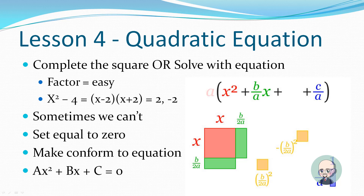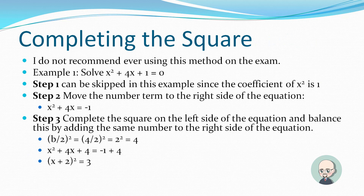We're back with lesson four: quadratic equations. There are two methods to solve them — either complete the square or use the quadratic formula. Sometimes you can factor, which is easy. For example, x squared minus 4 factors to (x minus 2)(x plus 2), giving answers of 2 and negative 2. But often we can't factor, especially on exam questions, so we set the equation equal to zero in the form ax squared plus bx plus c equals zero.